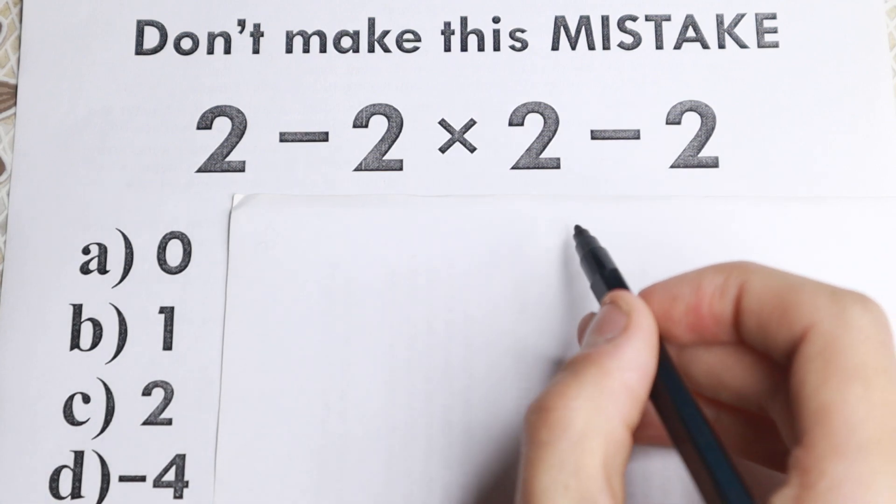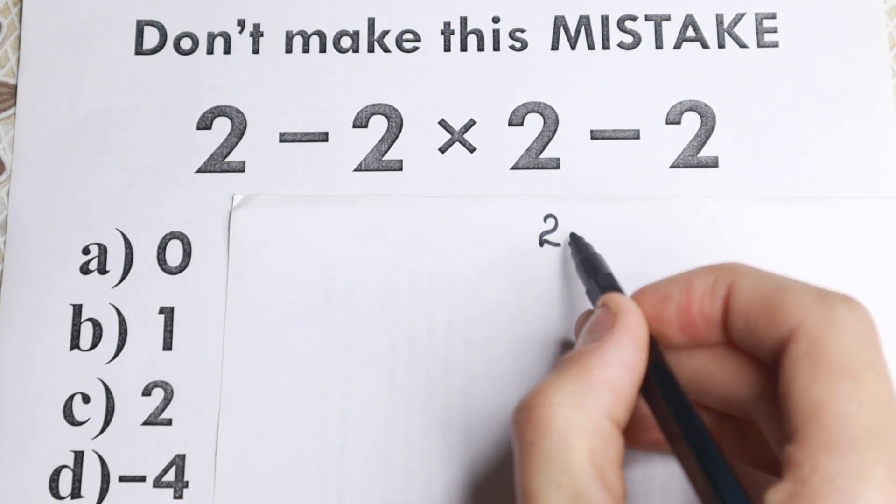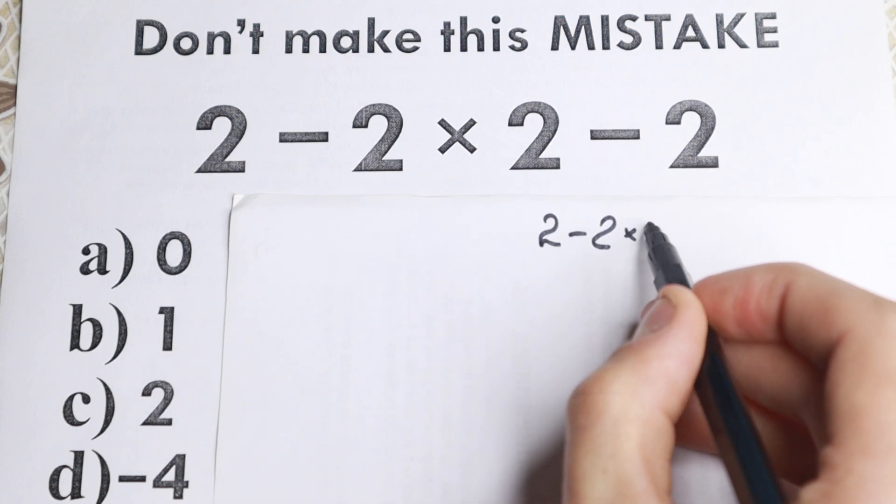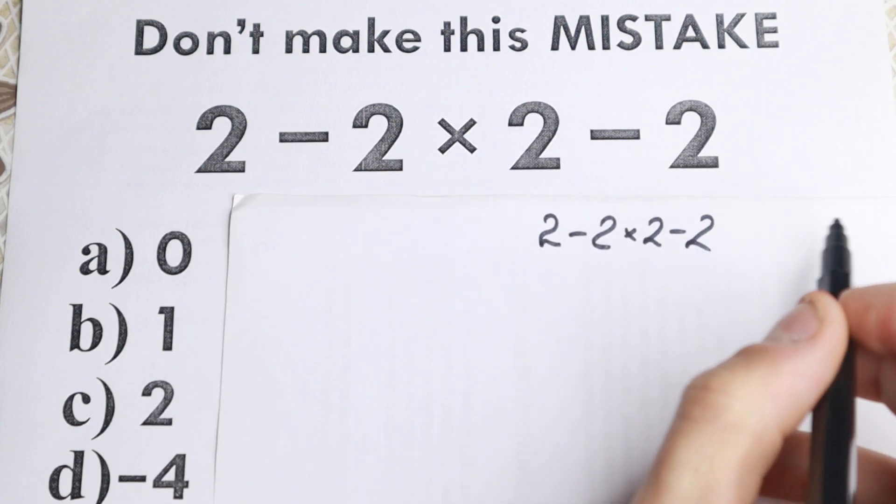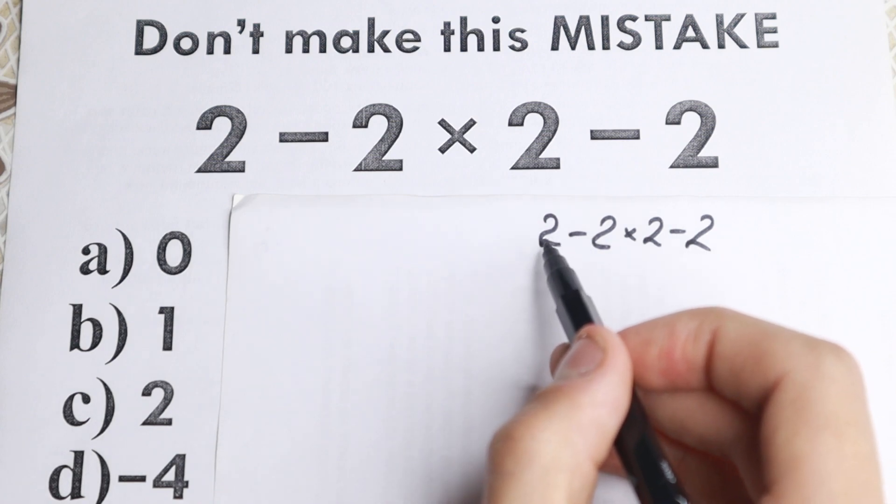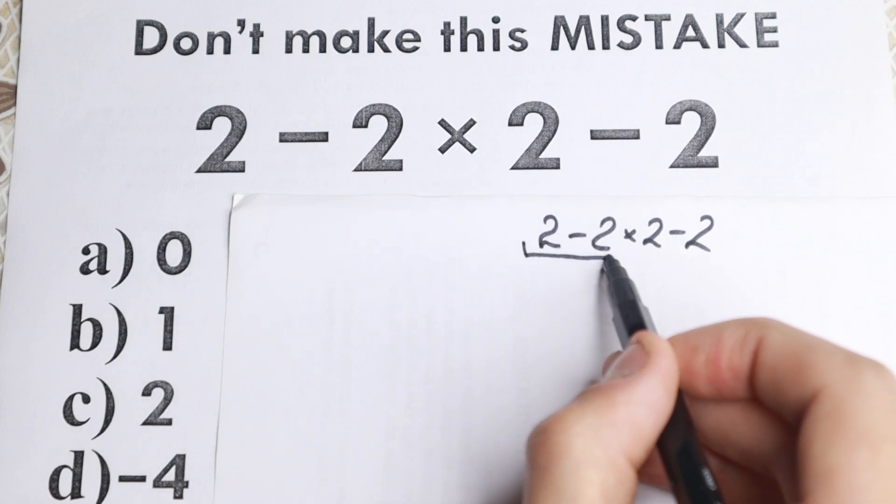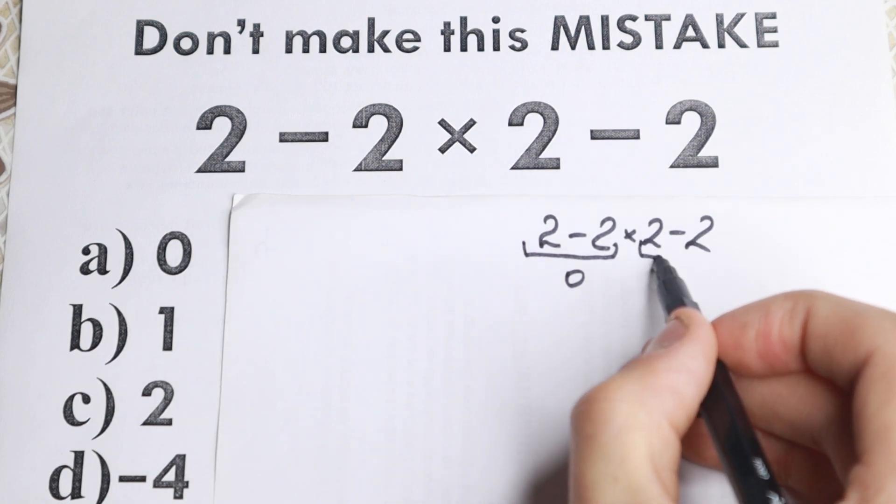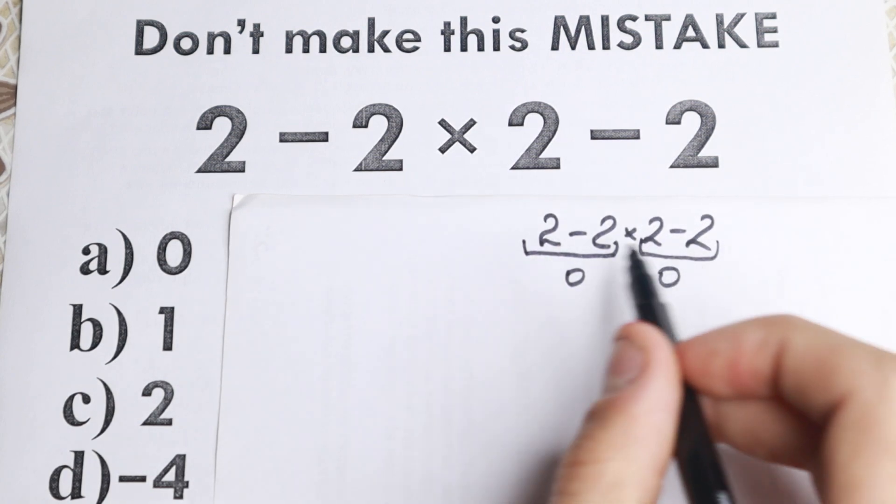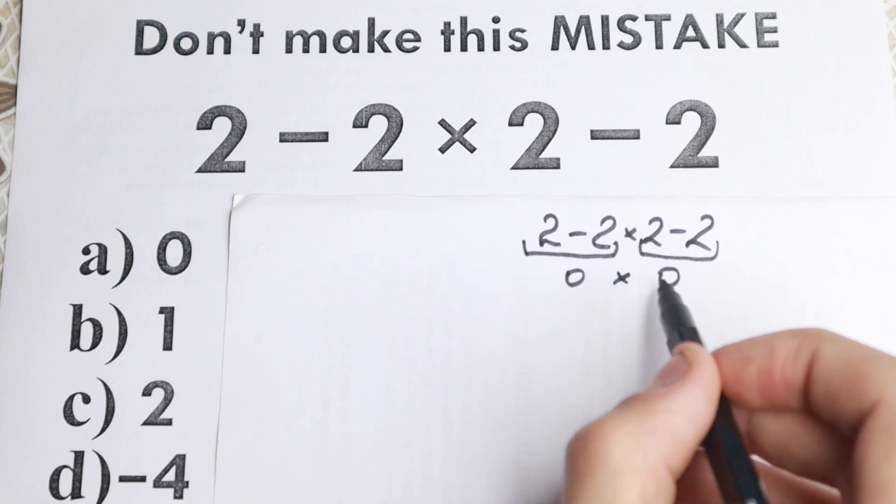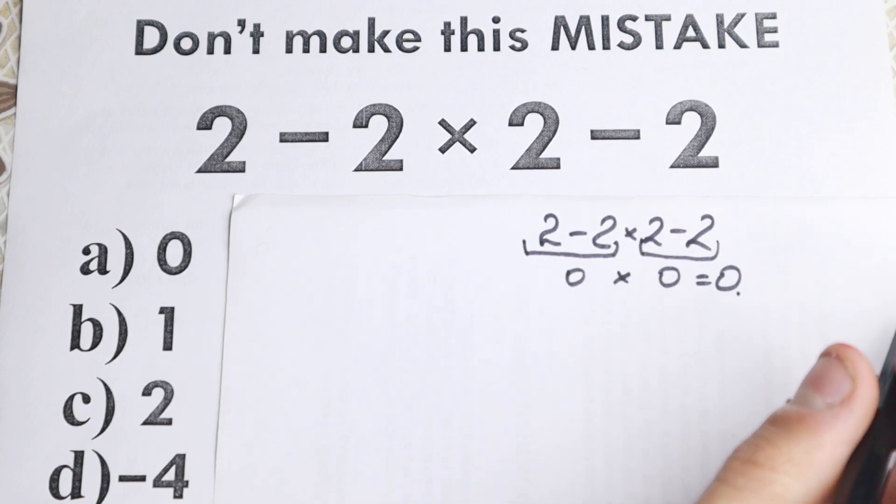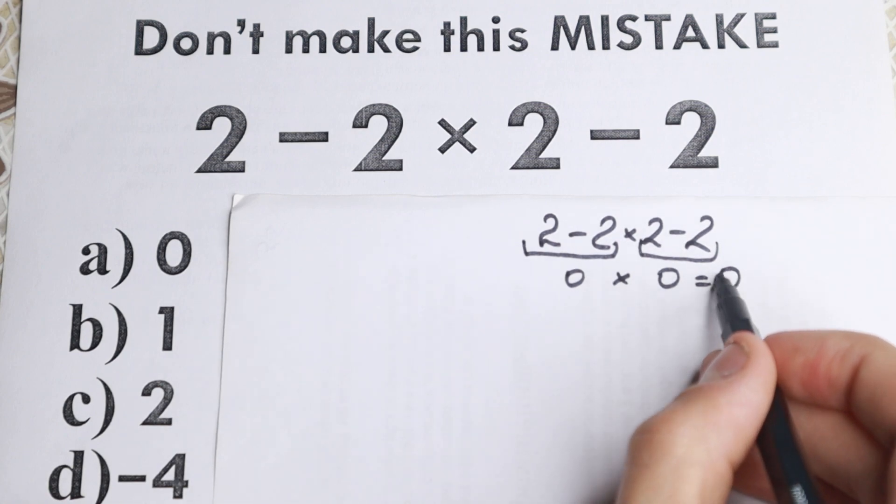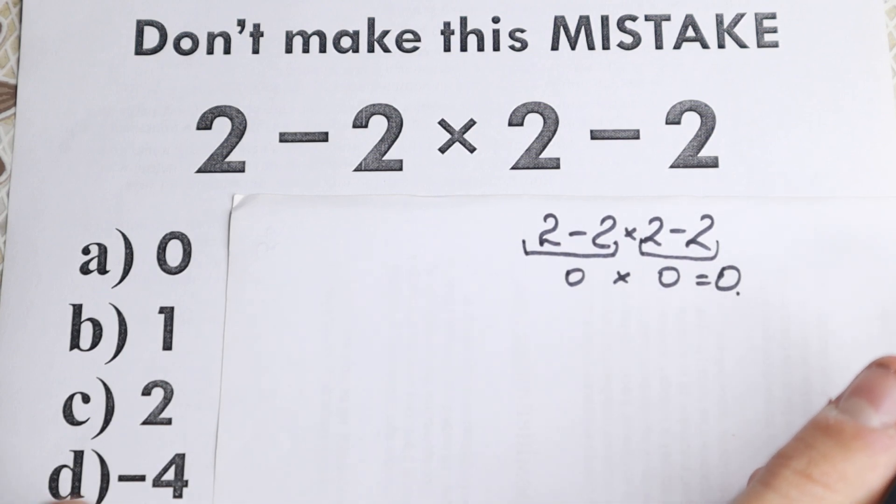Because a lot of students solve it like that. So we have 2 minus 2 times 2 minus 2. A lot of students say, OK, right here I have 2 minus 2 and they know that this is equal to 0. And they do this first step and they say, OK, in the end 2 minus 2 equal to 0. And then 0 times 0 equal to 0. So they want to solve it in an easier way. So they say the correct answer is 0. And let's check it. Let's check the correct answer.